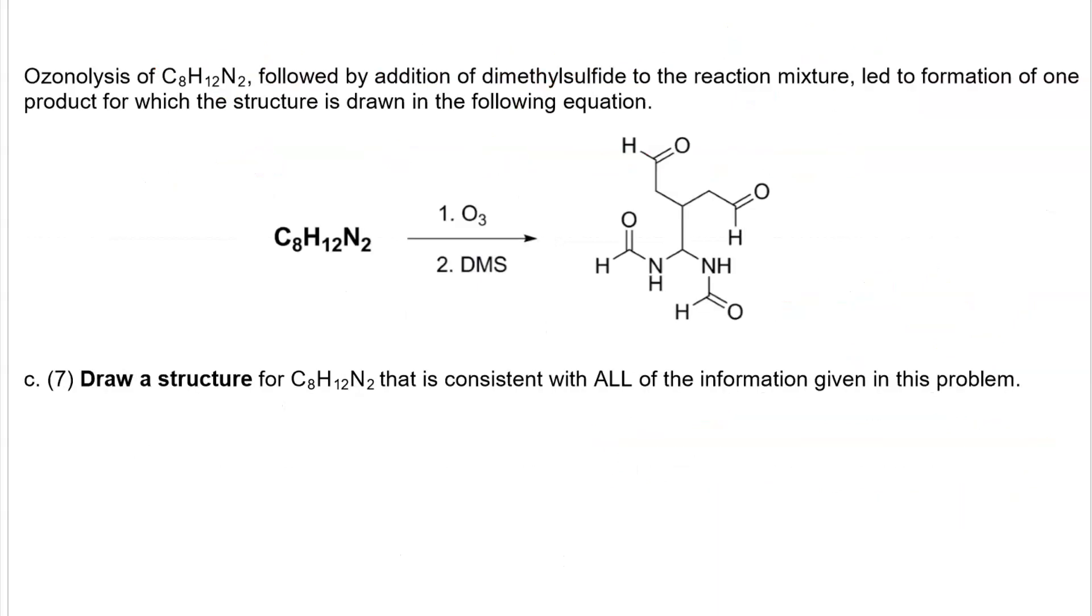Next we're shown the ozonolysis product. And what we're going to do is remove this oxygen and this oxygen and connect those 2 carbons via a double bond. And we'll do the same thing with this oxygen and this oxygen. Now this is just one of 3 different ways to do it.